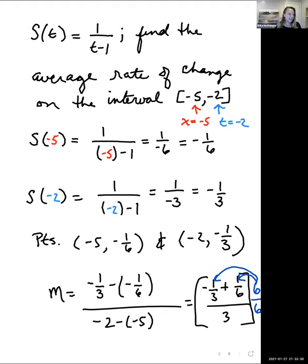Distributing that, six times negative one third - three goes into six twice, so it's going to leave us with negative two in the numerator. And then six times one sixth, the sixes cancel, so we're just left with plus one all over three times six is 18. This gives us negative one over 18.